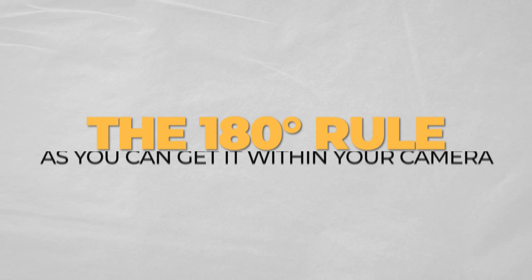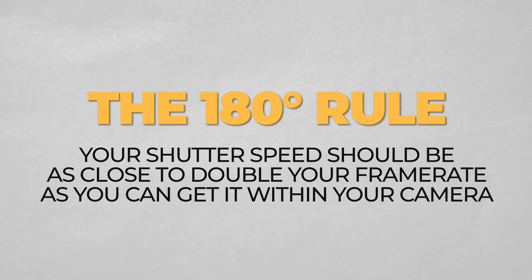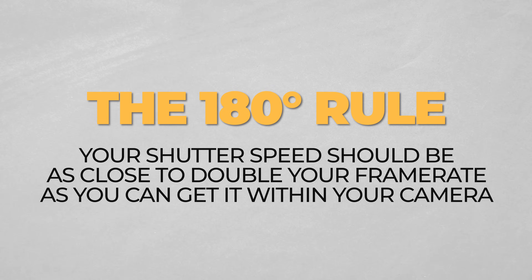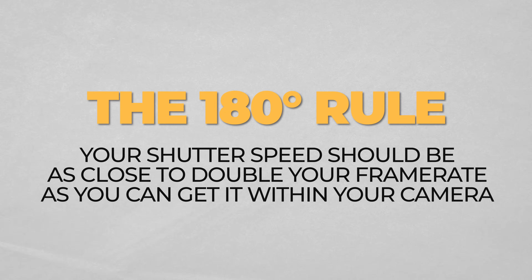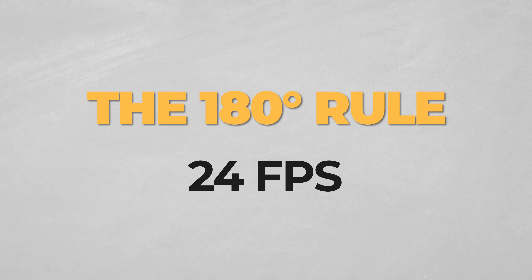But shutter speed is kind of an interesting thing in the world of video, because there's a standard for where it should be set called the 180-degree shutter rule. This rule states that your shutter speed should be as close to double the frame rate as you can get it within your camera to get visually pleasing and natural-looking motion blur.